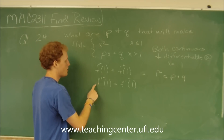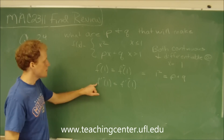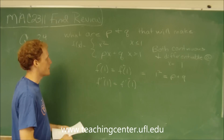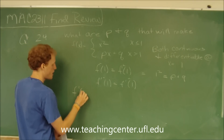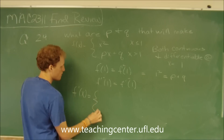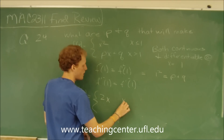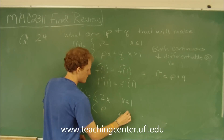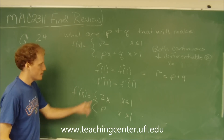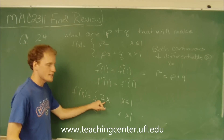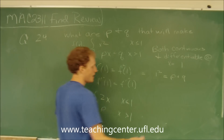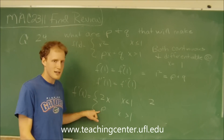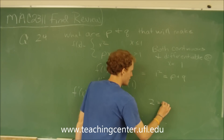Now we need to worry about the derivatives. The derivative at 1 from the left-hand side — the derivative of x squared is 2x, when x is less than 1 — and the derivative of the second equation is p, when x is greater than 1. So the derivative from the left at 1 gives us 2, and the derivative from the right gives us p. So 2 should equal p.